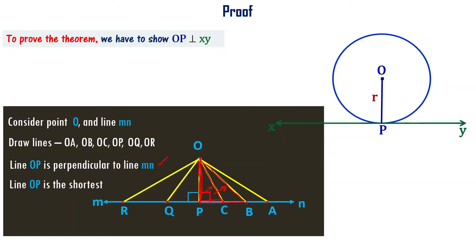You can see that OP is the shortest of the lines we have drawn. Among OA, OB, OC, OP, OQ — OP is the shortest. The perpendicular line is the shortest. If OP is the shortest line, it is the perpendicular to line MN.